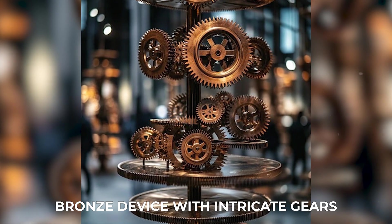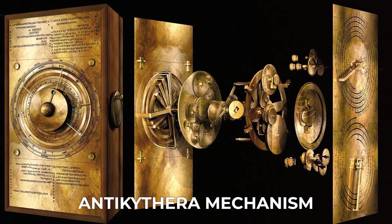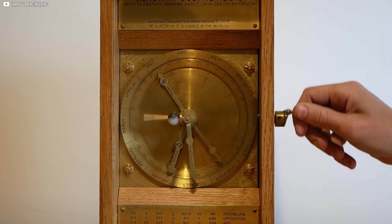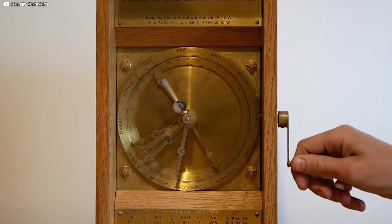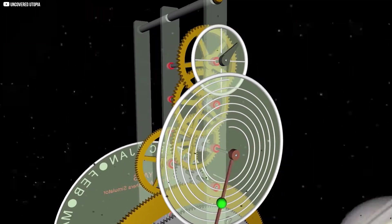A bronze device with intricate gears. Known today as the Antikythera mechanism, it was the world's first analog computer, built to predict celestial movements. It simulated the sky, not with electricity, but with engineering.